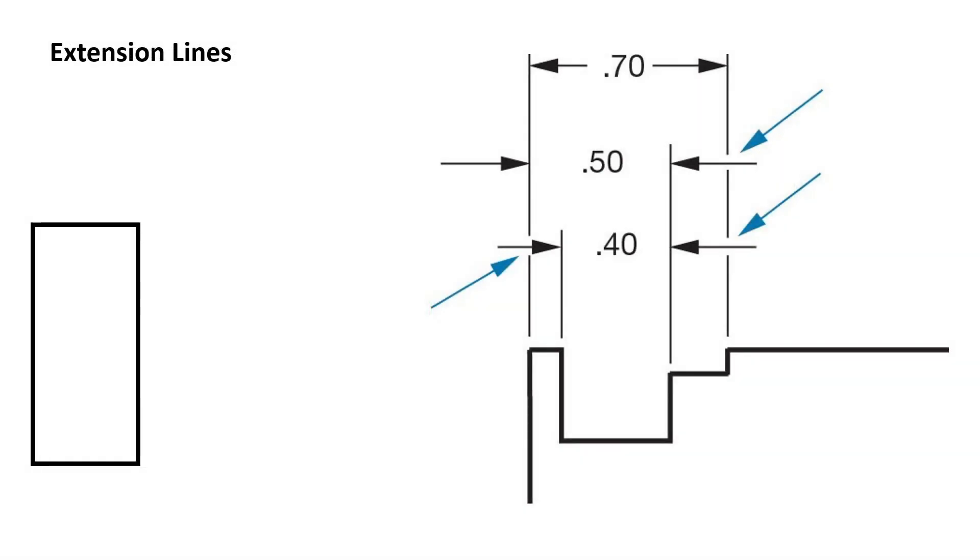Extension lines extend from a feature. If we wanted to know the distance from this point to this point, then extension lines are drawn extending from that feature as if the surface we are measuring were lengthened, but leaving a small gap of about 60 thousandths of an inch, that's 0.06 inches or 1.5 millimeters between the extension line and the feature as you can see here.